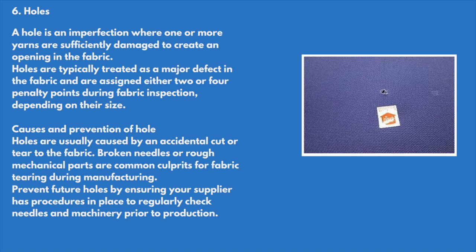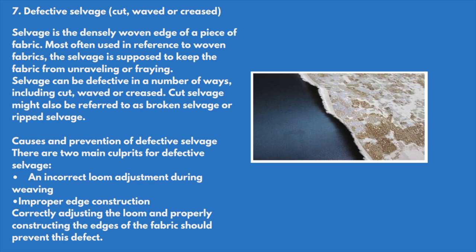Holes: a hole is an imperfection where one or more yarns are damaged to create an opening in the fabric. Holes are typically treated as a major defect and are assigned either two or four penalty points during fabric inspection depending on their size. Holes are usually caused by an accidental cut or tear to the fabric; broken needles or rough mechanical parts are common culprits. Prevent holes by ensuring your supplier has procedures in place to check needles and machinery prior to production.